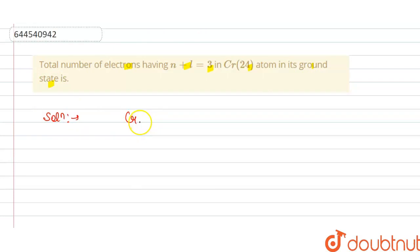So the electronic configuration is 1s² 2s² 2p⁶ 3s² 3p⁶ 3d⁵ and 4s¹.